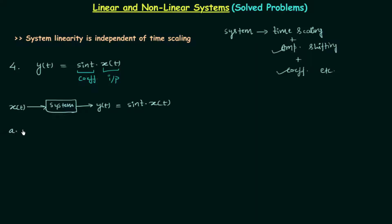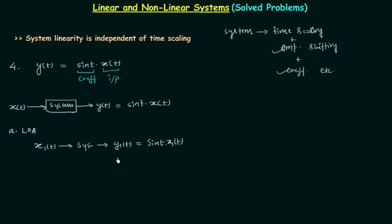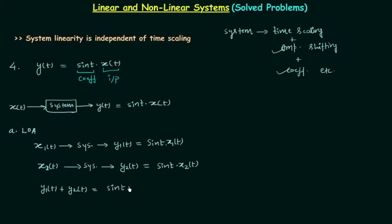Now we will check the law of additivity — whether this system follows the law of additivity or not. For this I will take input x1(t), and this input will produce output y1(t) which is equal to sin(t) · x1(t). In the same way, when the input is x2(t), the system will give output y2(t) equal to sin(t) · x2(t). Now adding y1(t) and y2(t) gives sin(t) · x1(t) + sin(t) · x2(t).